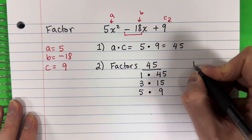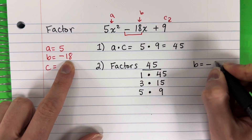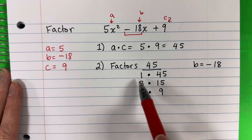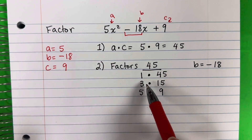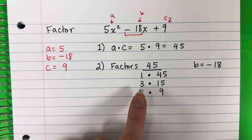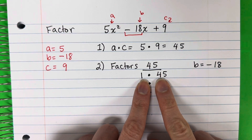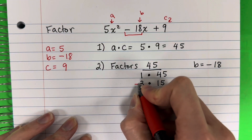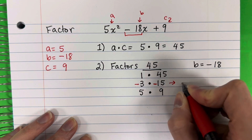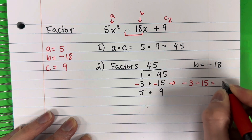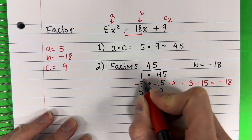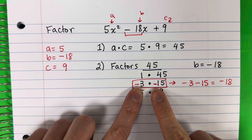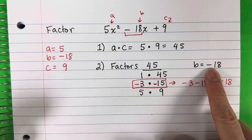Now I want to look at B. What number is B? Negative 18. So which two numbers can I add or subtract using positive or negative numbers to get negative 18? 1 and 45 — there's no way to get 18. But 3 and 15 — if I do negative 3 minus 15, that gives me negative 18. So the two numbers I want to use are negative 3 and negative 15.